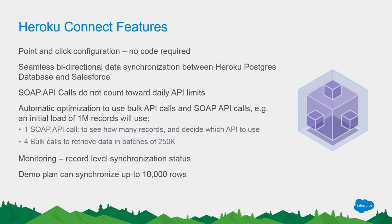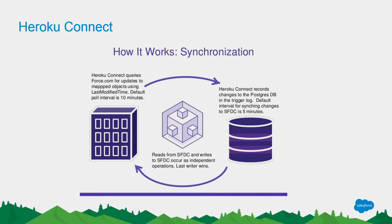Heroku Connect offers a number of plans. The basic demo plan can synchronize up to 10,000 rows, which is what we're going to set up later today. In terms of how it works: it synchronizes data between Salesforce and Postgres. Heroku Connect pulls Salesforce every 10 minutes to see whether any data has been modified, and if so, pushes it to Postgres. It also pulls the activity log of the Postgres database to see whether any operations have happened, and picks up only the changes to synchronize back to Salesforce. Both operations are independent of each other. The timing is configurable, and on the Heroku side it's every 10 seconds — not 5 minutes.